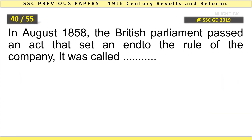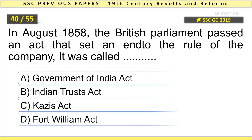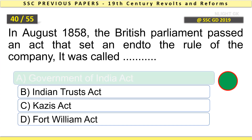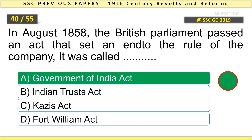In August 1858, the British Parliament passed an act that put an end to the role of the company. What was it called? Government of India Act.